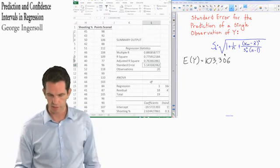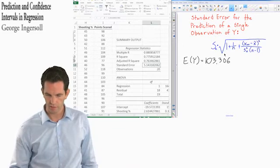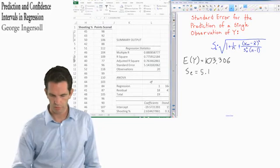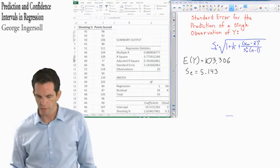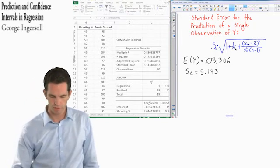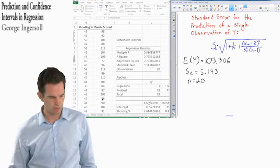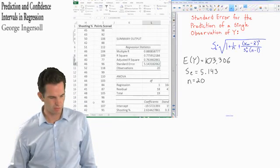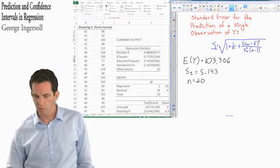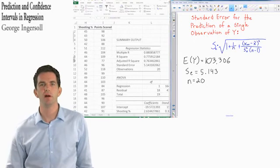All right, so to begin with, we have the standard error. That's something that we talked about in our last video. It's listed right here, the standard error of our regression. So I'll go ahead and write that in: 5.143. We also have n. That's the number of observations. That's 20. We just have 20 observations here, so that's pretty straightforward.